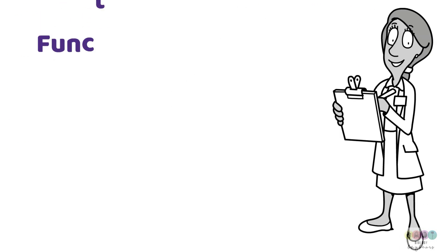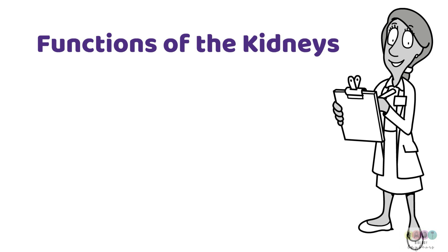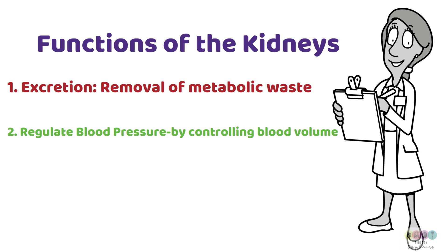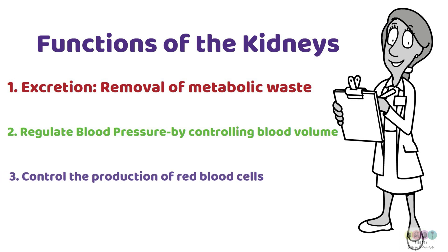The functions of the kidneys include: number one, excretion — the removal of metabolic waste; number two, the kidneys regulate blood pressure by controlling blood volume; and number three, the kidneys control the production of red blood cells, which is linked to the production of a particular hormone.